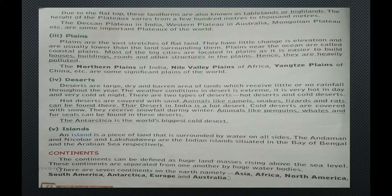Next is deserts. Deserts are large, dry and barren areas of land which receive little or no rainfall throughout the year. The weather conditions in deserts are extreme — very hot in the day and very cold at night. There are two types of deserts: hot deserts and cold deserts. Hot deserts are covered with sand. Animals like camels, snakes, lizards and rats can be found there. The Thar desert in India is an example of a hot desert. Cold deserts are covered with snow and receive snowfall during winter. Animals like penguins, whales and fur seals can be found there. Antarctica is the world's biggest cold desert.